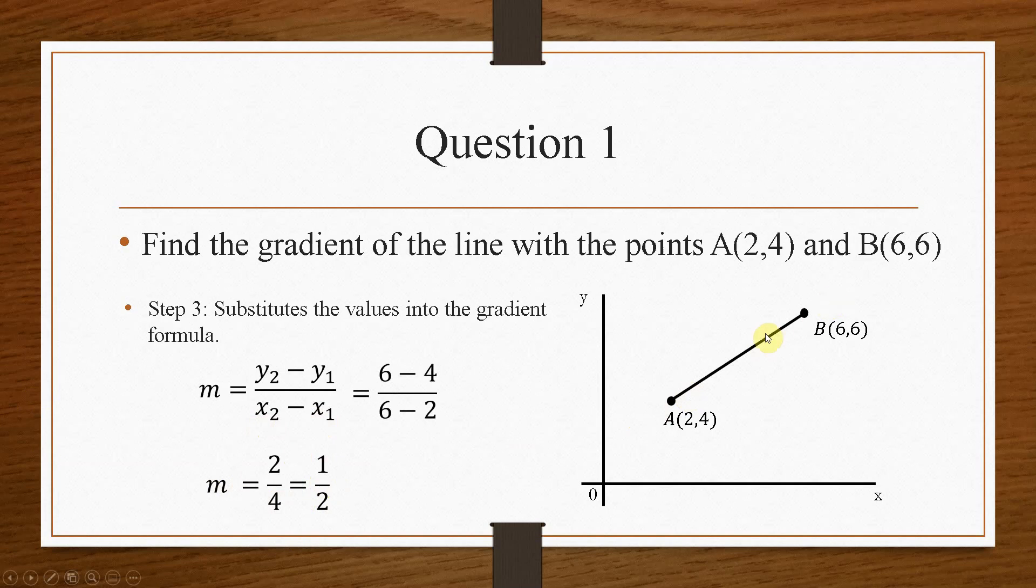So we have a positive gradient here. If this was negative, your line would extend that way. So by drawing the line, it can give you an indication of do you expect a positive or a negative value.